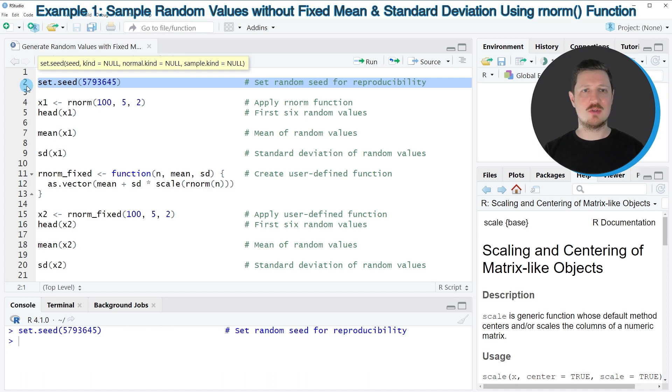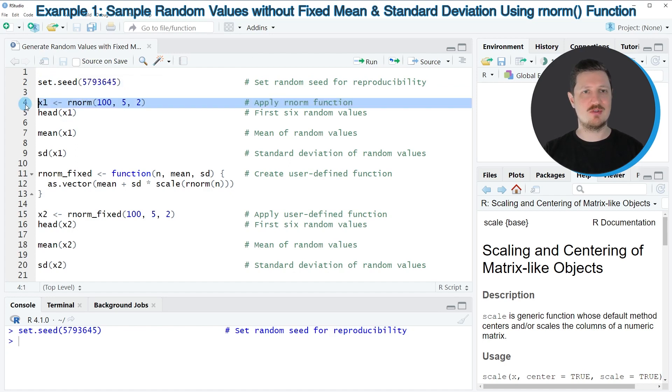In the next step I want to demonstrate how you would usually generate random values based on the rnorm function. So if you want to generate normally distributed values, you would use the rnorm function as you can see in line 4 of the code. Within this function you would specify the number of values that you want to generate, then you would specify a mean value and a standard deviation.